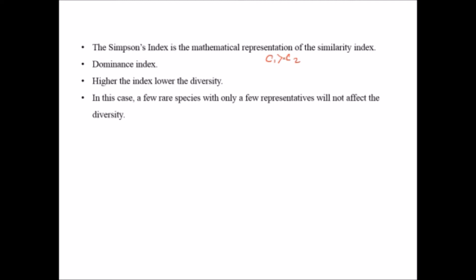In case of Shannon index we considered each and every species. Here is the formula to calculate the Simpson's diversity index, but here we are talking about the Simpson index which is a similarity, it is dealing with the diversity.